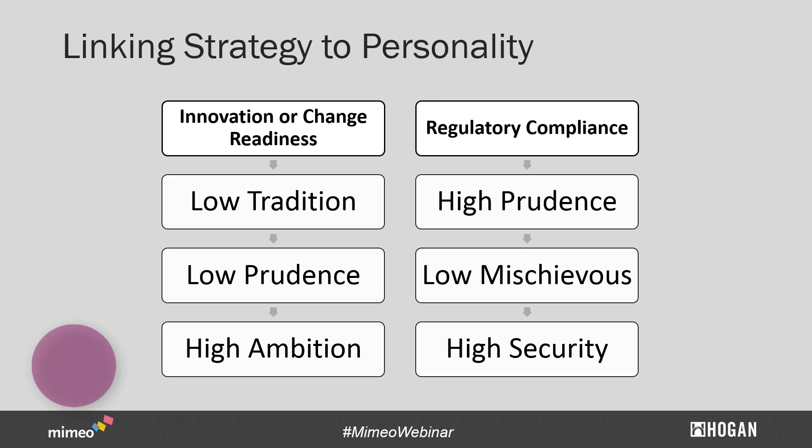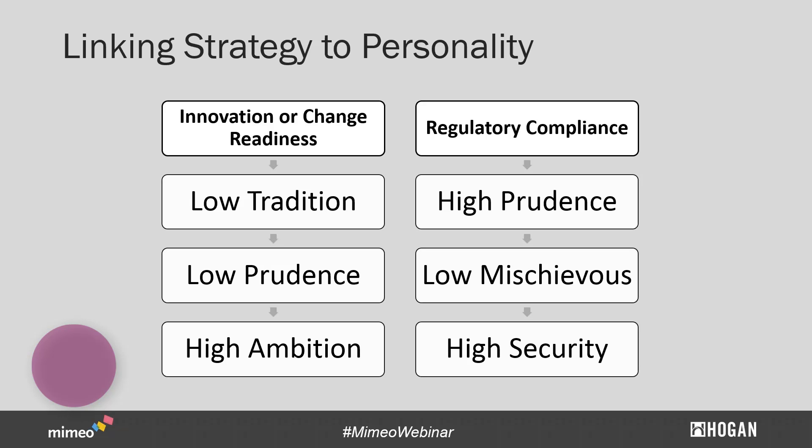For instance, if you need to prepare yourself for a big change event — maybe a merger or an acquisition, or maybe your organization is starting to stagnate and you need to prepare for a big year or two of innovation — we know that you need to be developing around certain characteristics that we measure in our assessments. We're going to be looking for people who are low on our tradition value, low on our prudent scale, and high on our ambition scale. Those are the types of leaders who can really help drive change in an organization.